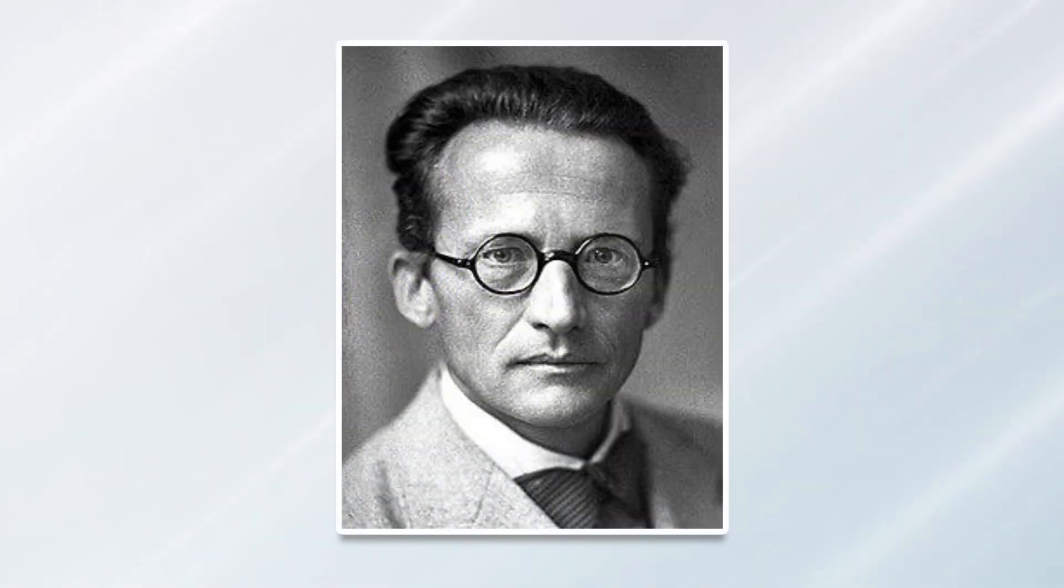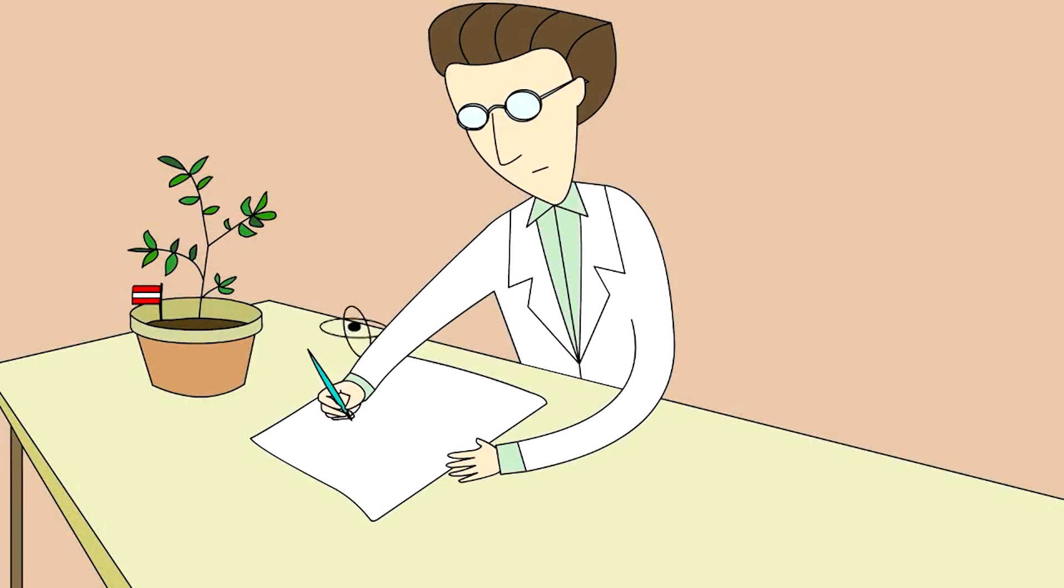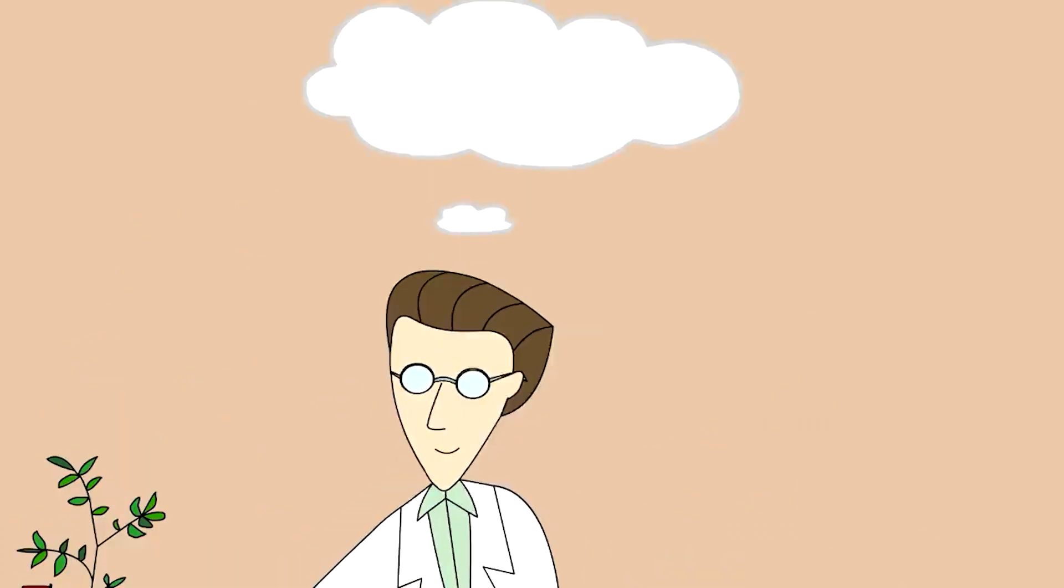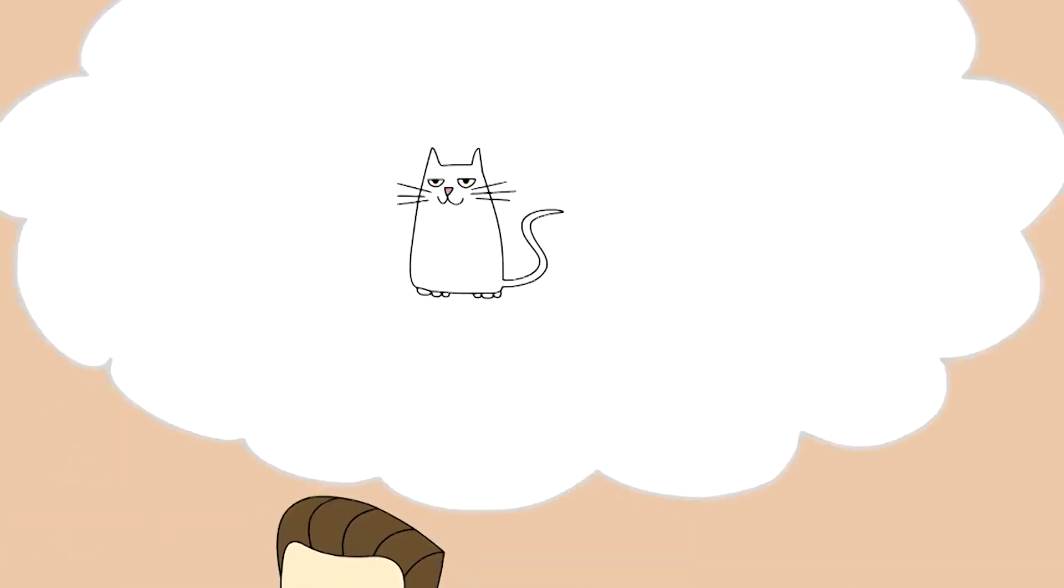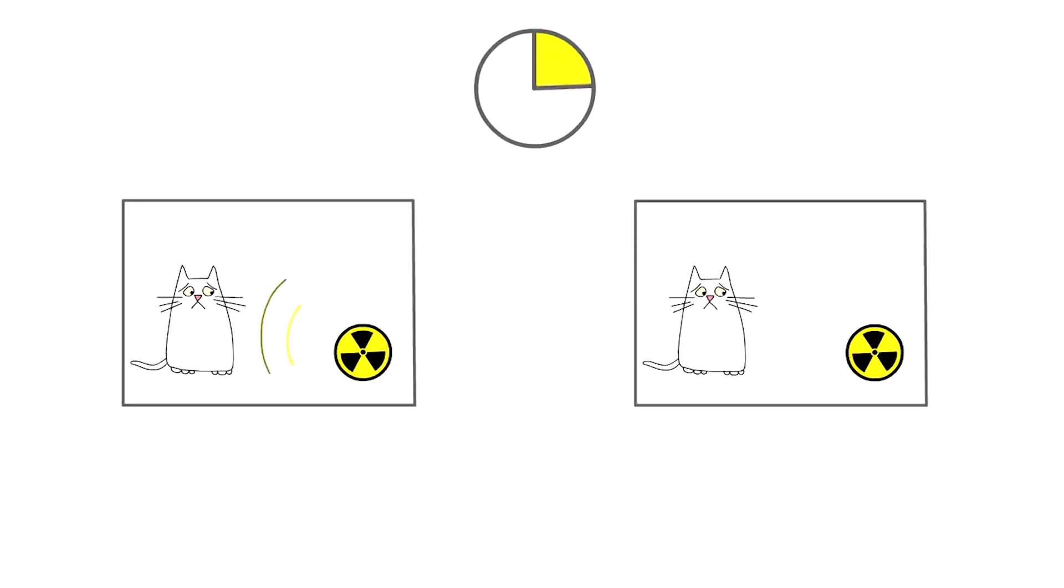Superposition is the ability of a quantum system to be in multiple states at the same time until it is measured. This thought experiment was devised by physicist Erwin Schrödinger in 1935. The cat state, named after Schrödinger's cat, is a quantum state composed of two geometrically opposed conditions at the same time, such as the possibilities that a cat is alive and dead at the same time. Schrödinger's cat: a cat, a flask of poison, and a radioactive source are placed in a sealed box. If an internal monitor detects radioactivity, the flask is shattered, releasing the poison which kills the cat.